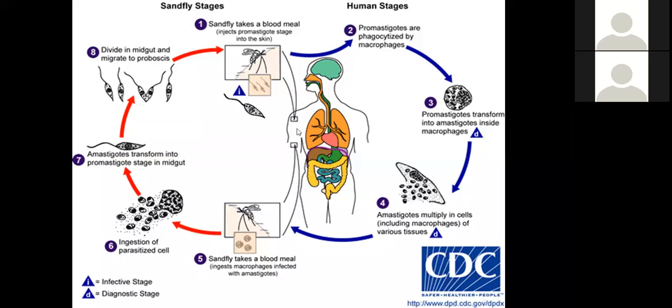With mucocutaneous leishmaniasis (L. braziliensis), the target is the soft tissue of the upper respiratory system, causing deeper and wider lesions compared to cutaneous leishmaniasis.